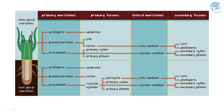The primary meristem includes protoderm, ground meristem, and pro cambium. Epidermis is the primary tissue derived from protoderm. Pith and cortex are primary tissues derived from ground meristem. Primary xylem and primary phloem are derived from pro cambium. As lateral meristem in dicots, cortex acts as cork cambium and forms cork and phelloderm as secondary tissue. Primary xylem and primary phloem act as vascular cambium, forming secondary xylem and secondary phloem. Similarly in root apical meristem, protoderm gives rise to epidermis, ground meristem to cortex, and pro cambium to vascular cylinder.